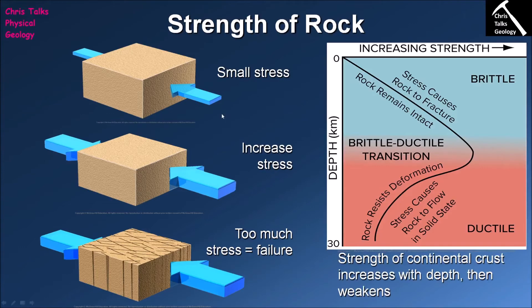Looking at this diagram summarizing the upper 30 kilometers of the Earth's crust, the vertical axis represents depth — zero is the current ground surface and 30 represents 30 kilometers down — while the horizontal axis represents increasing strength, meaning how much stress the rock can resist before deforming. This diagram is split into two regions: brittle and ductile.